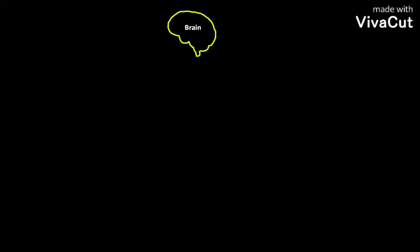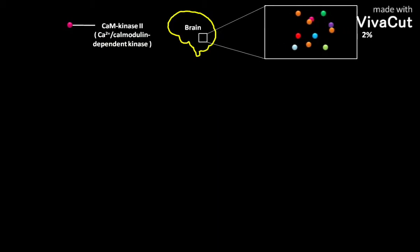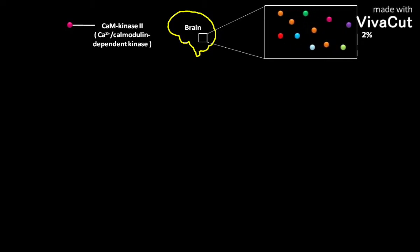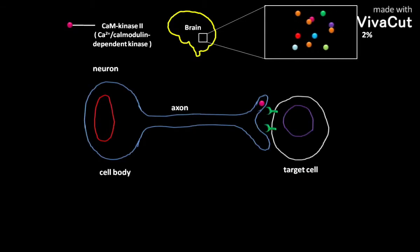Enzyme CAM kinase 2 is present in the cytosol of most animal cells, but enriched especially in the nervous system. In some regions of the brain, CAM kinase 2 forms up to 2% of the total protein mass. CAM kinase 2 stands for Ca2+ calmodulin-dependent kinase, and it is highly concentrated in the synapses.